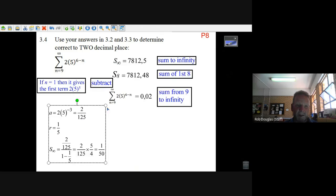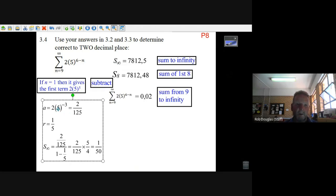If you did it the long way, took the first term by putting 9 in here, used the same r and put it in the formula, you get 1/50, which is the same answer as 0.02.